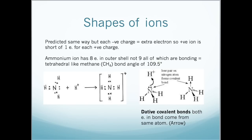We also need to know about shapes of ions, and the shapes of ions are predicted in the same way as the shapes of molecules. The only thing to be careful of is that each negative charge means that there is an extra electron, and positive ions are short of one electron for each positive charge. The ammonium ion has eight electrons in the outer shell, not nine, all of which are bonding. Therefore it has a tetrahedral shape like methane and a bond angle of 109.5 degrees. We can see dative covalent bonds in which both electrons in the bond come from the same atom, which is usually represented by an arrow as shown here.